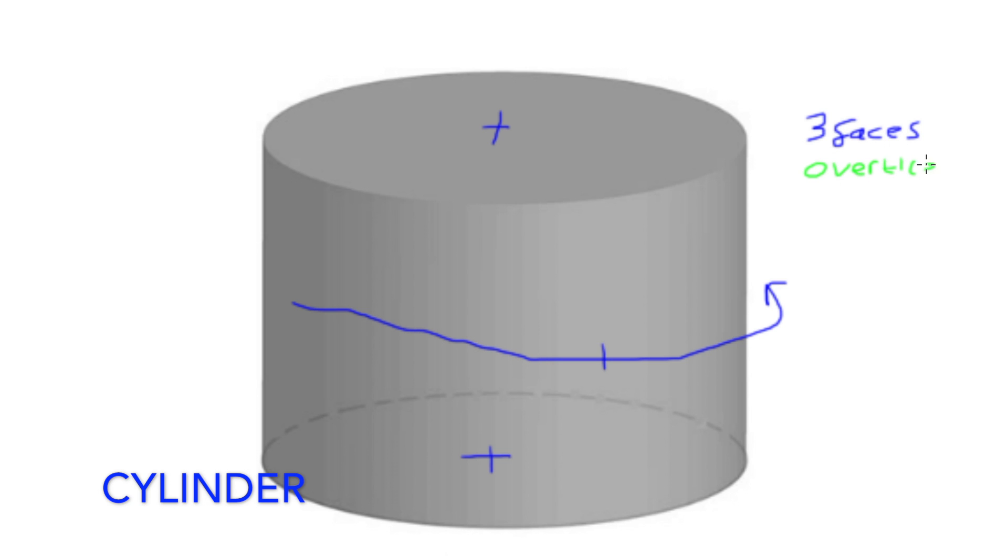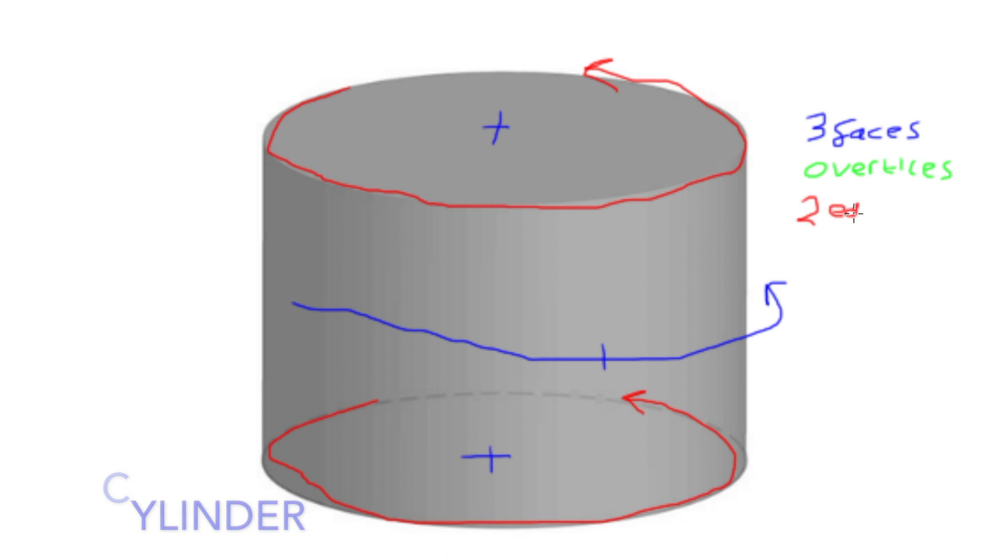Cylinders have no points where 3 vertices meet, therefore it has 0. It has 2 edges, as 2 faces meet at both the point on the top and the bottom.